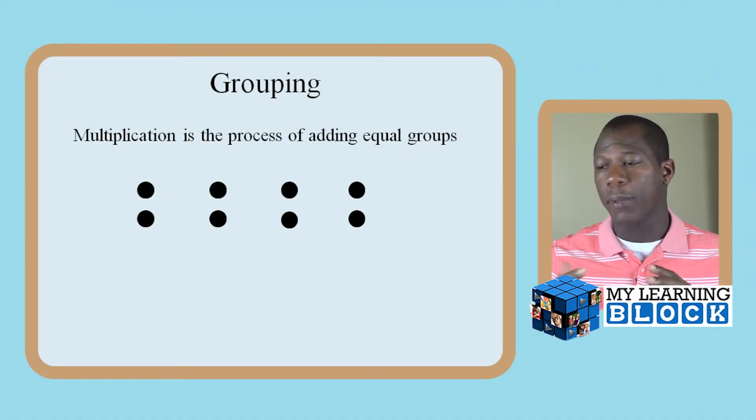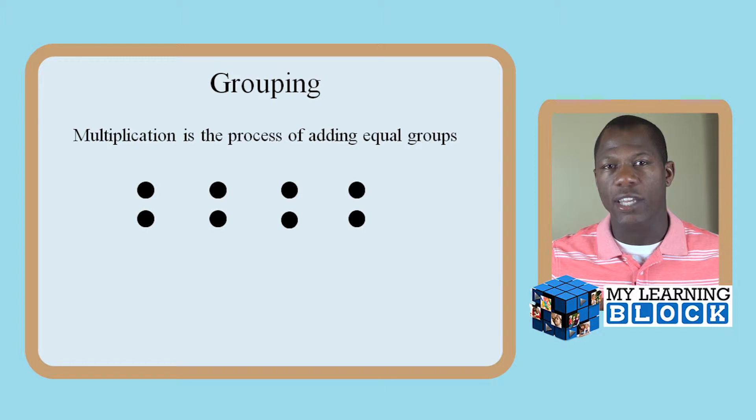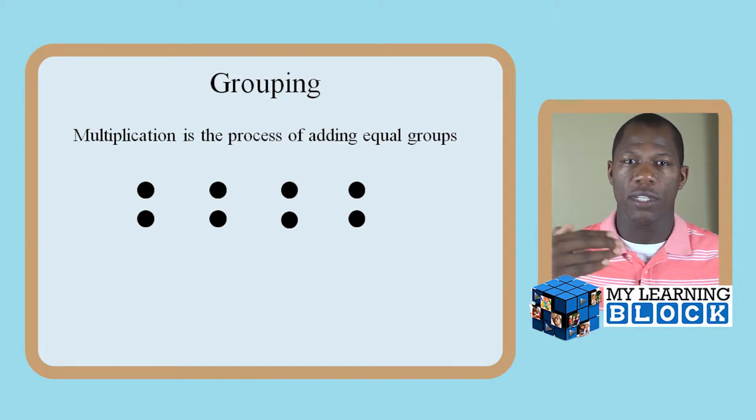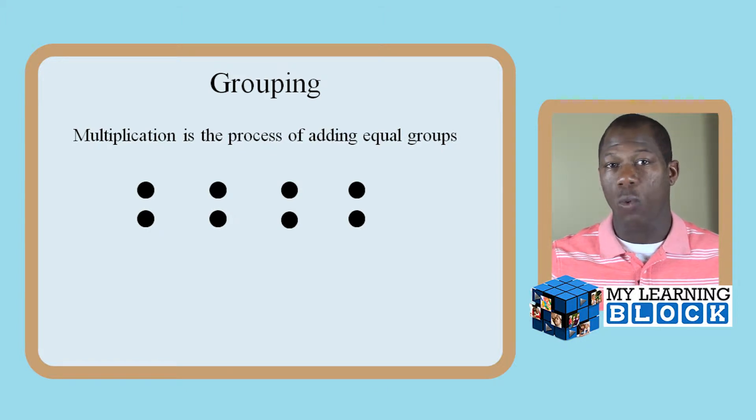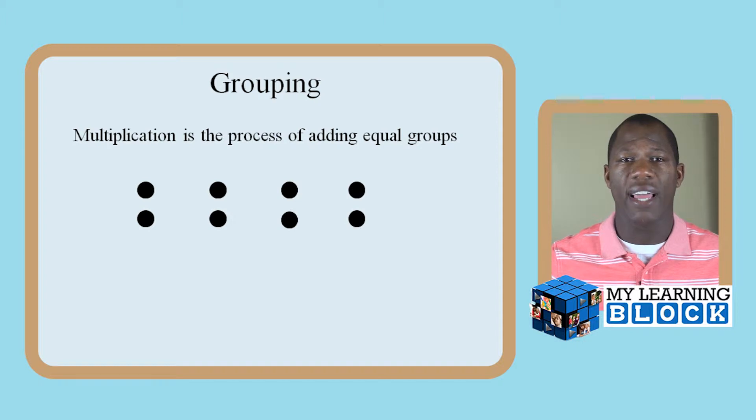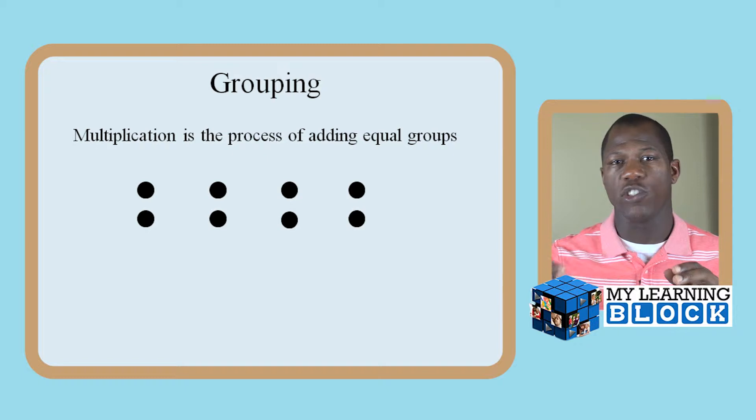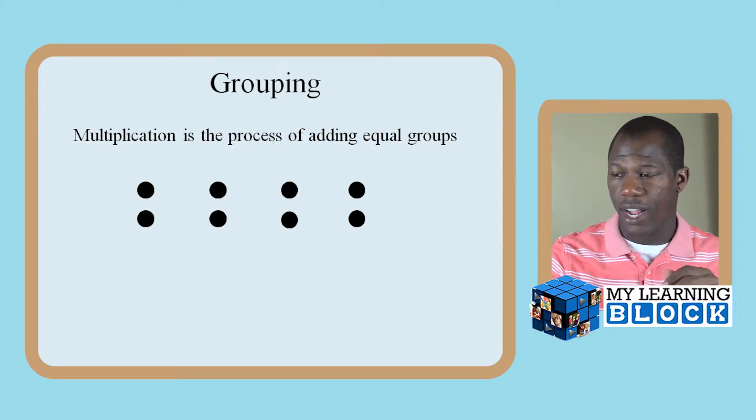I'm going to show you how to teach this process in a quick manner using a method called grouping. Multiplication is the process of adding equal groups. Multiplication is adding three plus three plus three plus three, which is basically three times four, which equals twelve. When you're multiplying using equal groups, you have the exact amount in each group.